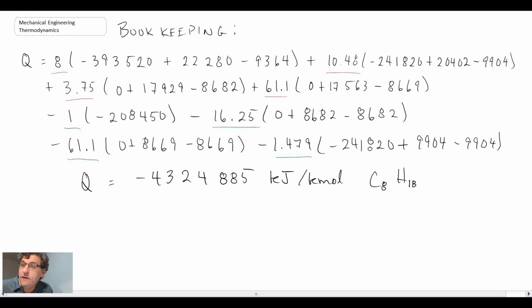We get negative 4,324,885 kJ per kilomole C8H18. Now they wanted us to evaluate this per unit mass, so in order to do that, we need to calculate the molar mass of C8H18 or octane.